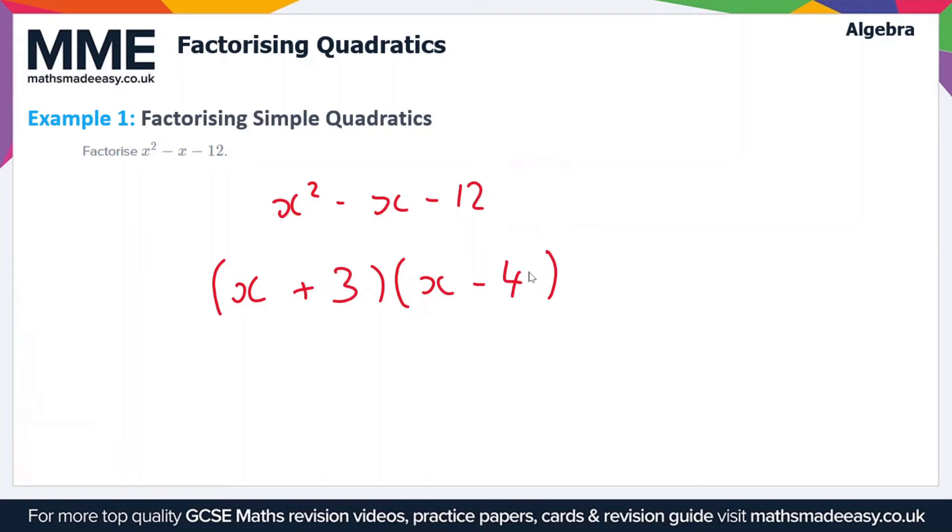When you add -4x and +3x together, you get -x. If b is also negative, then the larger of the two numbers will have to be the negative number. Since 4 is larger than 3, the 4 has to be the negative number.